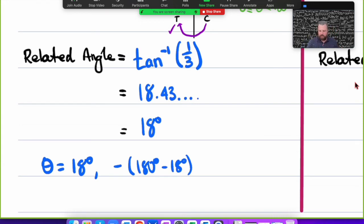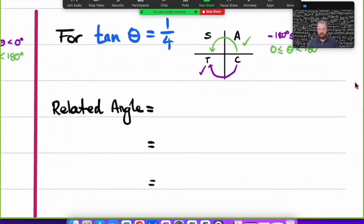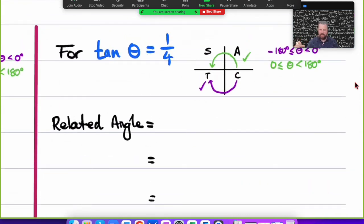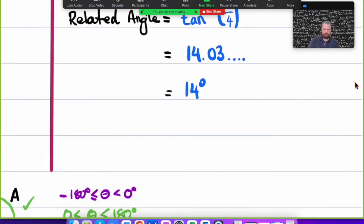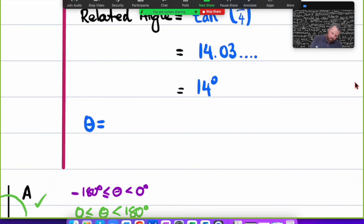In the same way, we're going to do that with tan θ = 1/4. Again, we've got the exact same domains and movement patterns. The related angle is inverse tan of 1/4. When we evaluate that, we get 14.03..., so we round to 14°. Again, θ will equal 14° in that first quadrant and -180° minus our related angle in that third quadrant because it was negative.